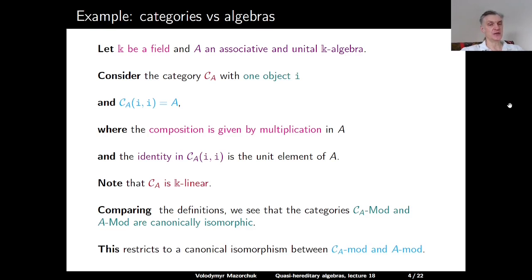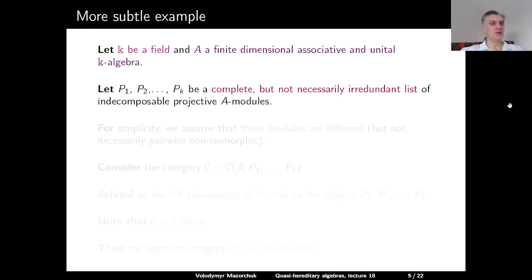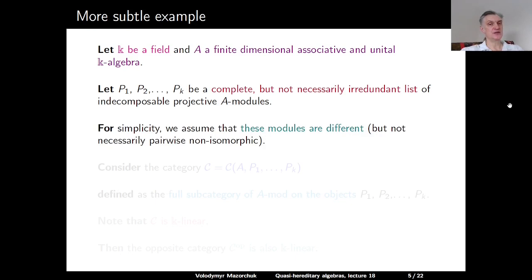This restricts to a canonical isomorphism between the corresponding categories of all finitely generated modules over A or over C_A. Here is a more subtle example. Let k be a field and A a finite-dimensional associative and unital k-algebra. Let P_1, P_2, ..., P_k be a complete but not necessarily irredundant list of indecomposable projective modules. For simplicity, assume that these modules are pairwise different — different objects in A-mod.